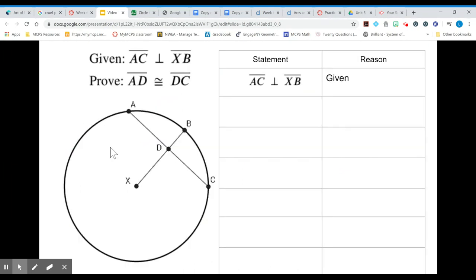So we are given that AC and XB are perpendicular to one another and we want to prove that the chord is bisected or that these two pieces have the same length. First we know that these two angles are right angles by the definition of perpendicular.